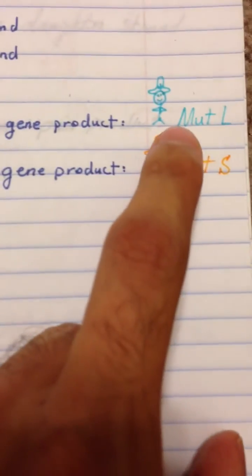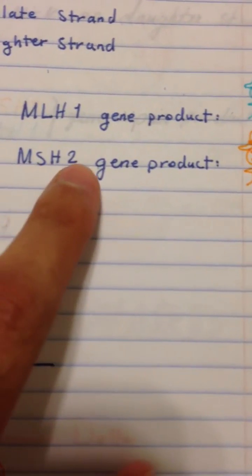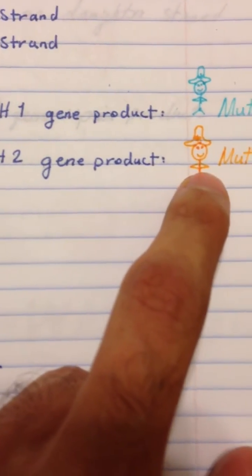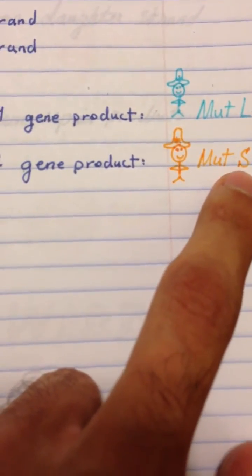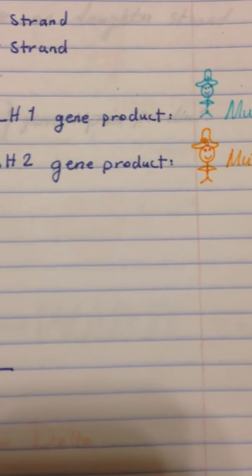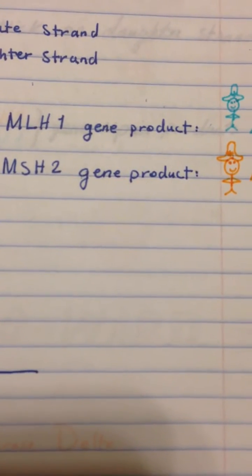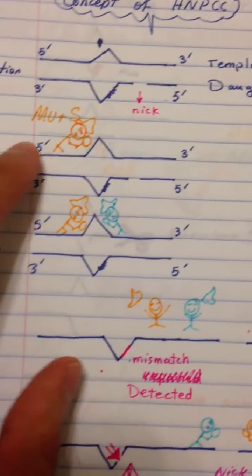The MLH1 gene has MutL, and the MSH2 gene has MutS. These two act as detectives to detect the mistaken part on the DNA. So here is the DNA...